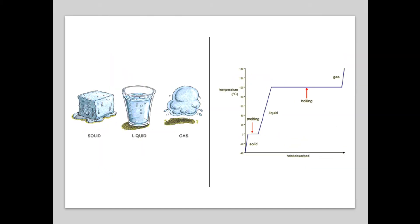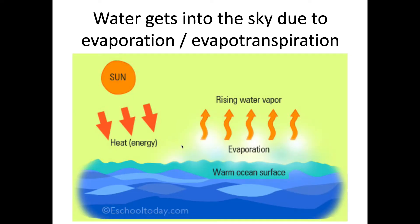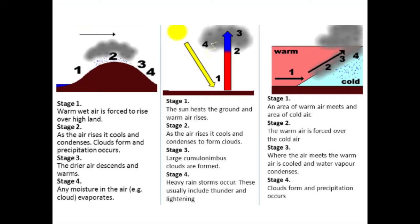The reason that the air rises is different in each case: it rises because it's forced over a hill or mountain, because it's hot, or because it meets cold air. But the end result is exactly the same — air rises and it cools down. And when air cools down, it will change state: instead of being a gas, it's going to turn into a liquid or a solid depending on the temperature. And that, ladies and gents, is called condensing — condensation.